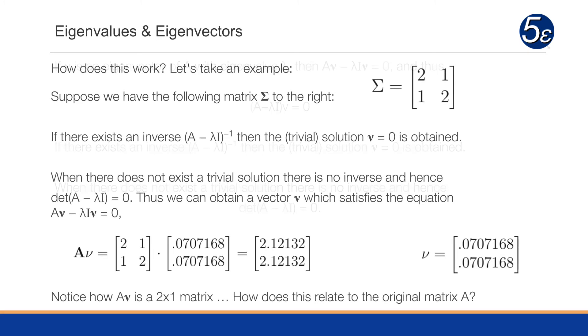So how does this work? Let's take an example. Let's say we have this covariance matrix, 2, 1, 1, 2. Now, if there exists an inverse of A minus lambda I, then the trivial solution of nu equals zero is obtained. So we're not concerned in that case.